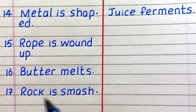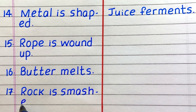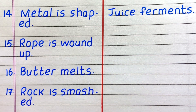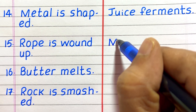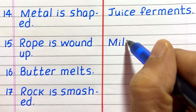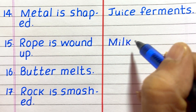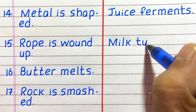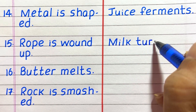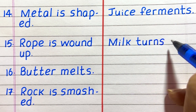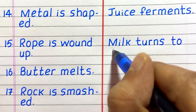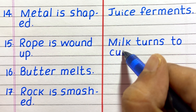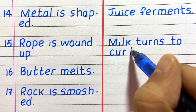Seventeenth, rock is smashed. Fifteenth example of a chemical change is milk turns to curd.